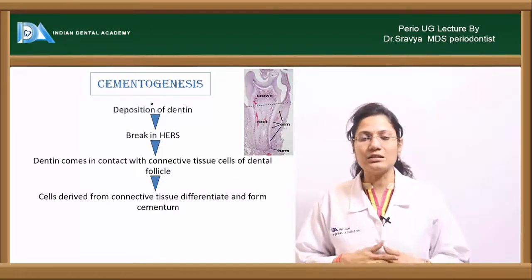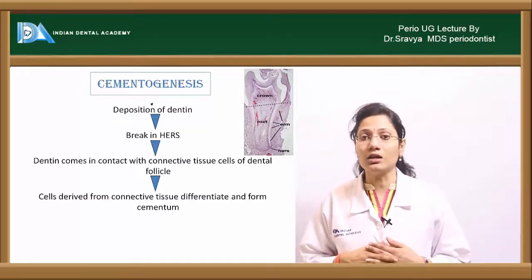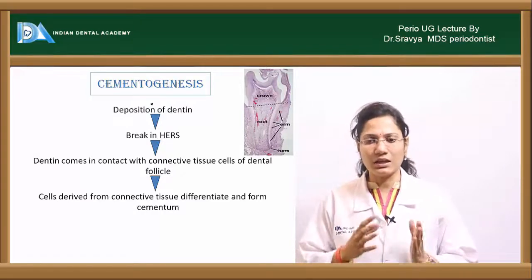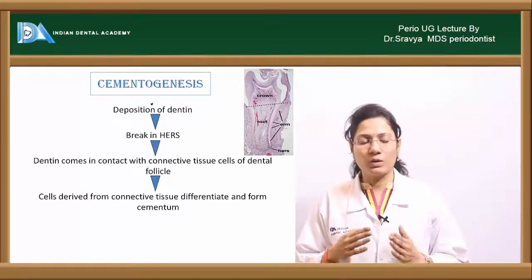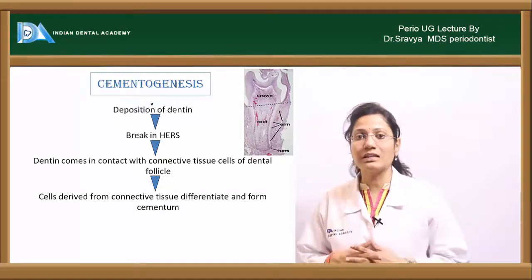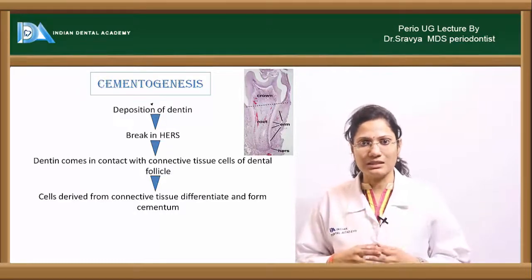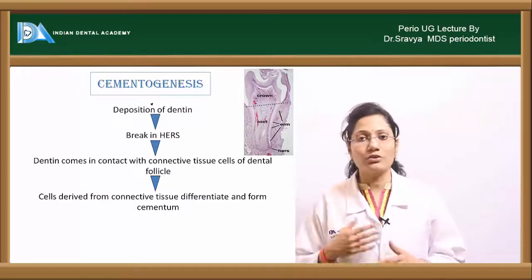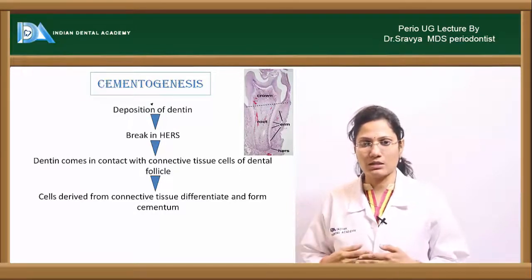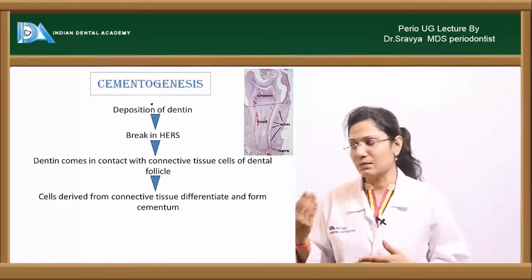Once the dentine is formed, there is an immediate break in Hertwig's epithelial root sheath, exposing your dental follicle cells — the connective tissue of the dental follicle. These dental follicle cells are responsible for differentiating into cementoblasts.